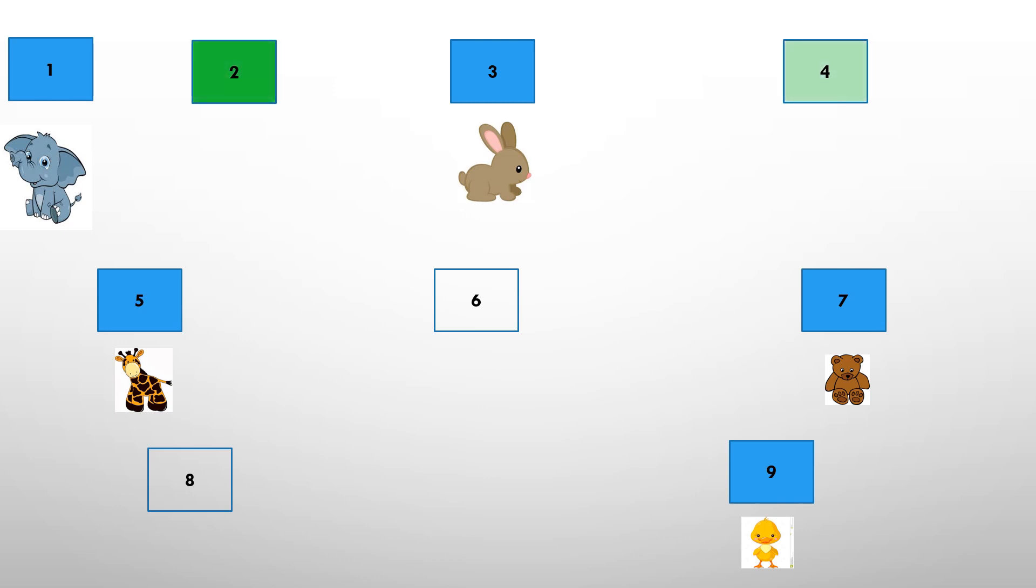And two, four, six, eight are all even numbers because there are no animals left out.